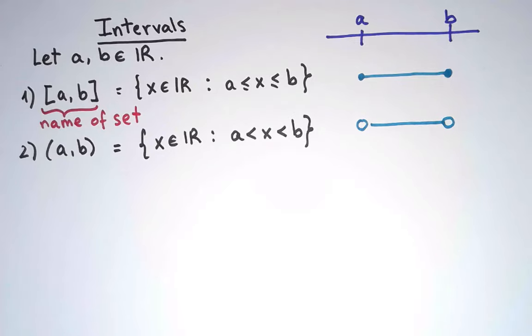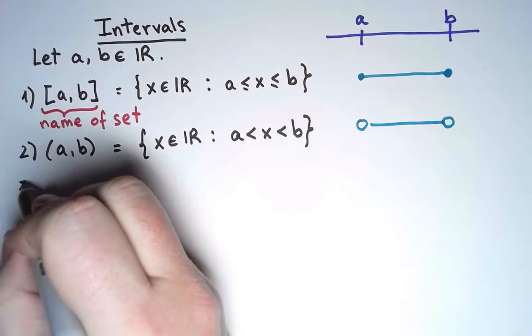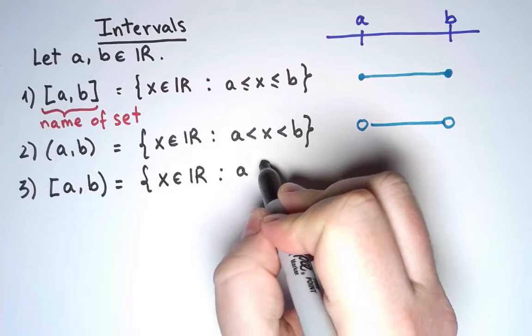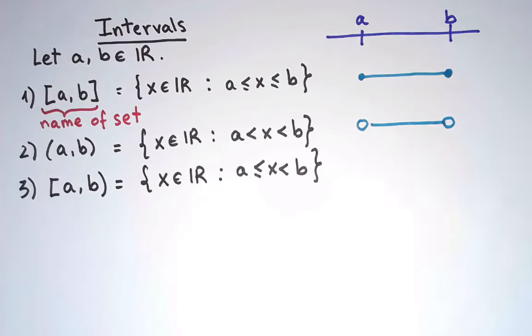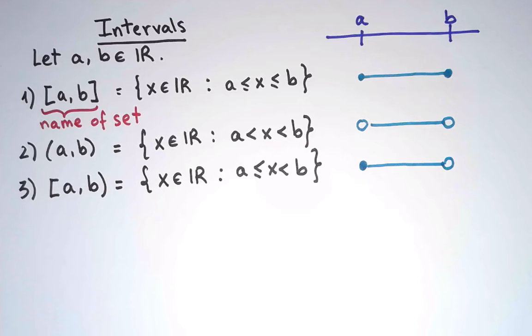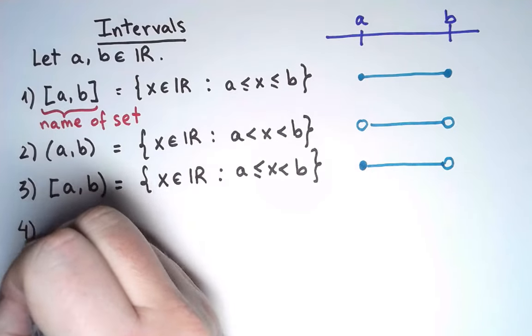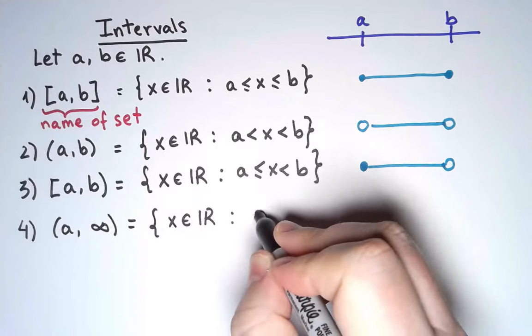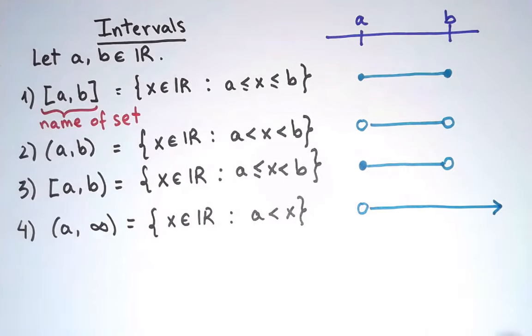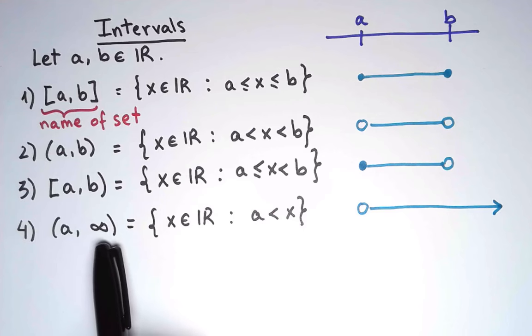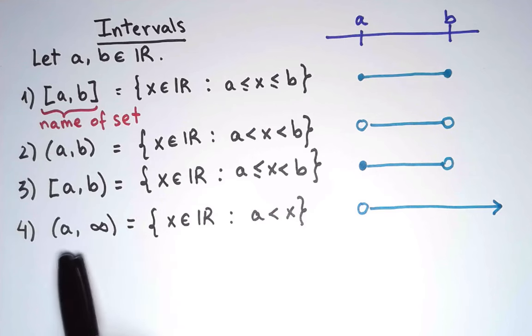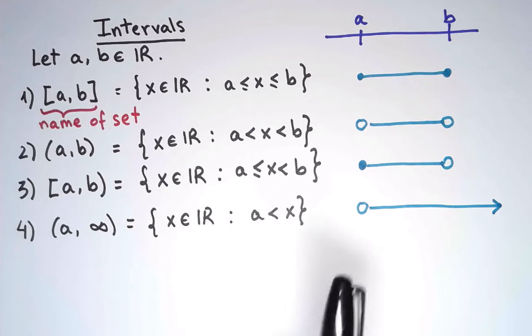Of course, I can also mix and match, for example. A different variation is to not include an endpoint, and leave it unbounded. Notice that infinity is not a number, and is never included. This is just a piece of notation to say I'm not putting a constraint on the right. So this is the set of real numbers greater than a, and that's it. So here is another variation.